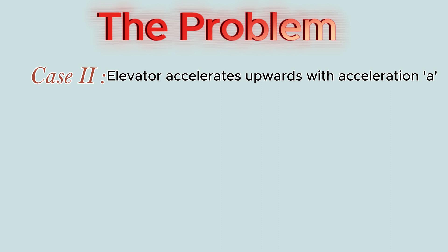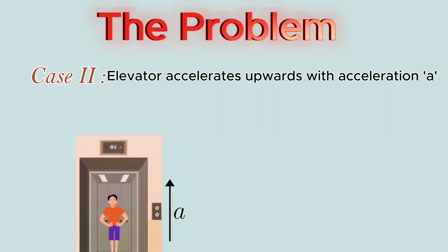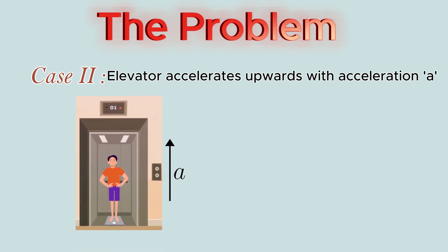The second case is when the elevator moves with an acceleration a in the upward direction. As in the previous case, the weight of the man will act downward and the normal reaction will act upward. Apart from these two forces, there will be a pseudo force in the upward direction due to upward accelerated motion of the elevator. This net upward force can be written as ma = R - mg.